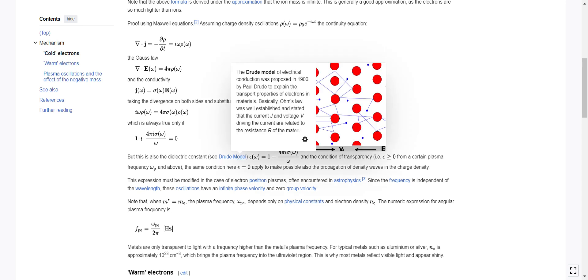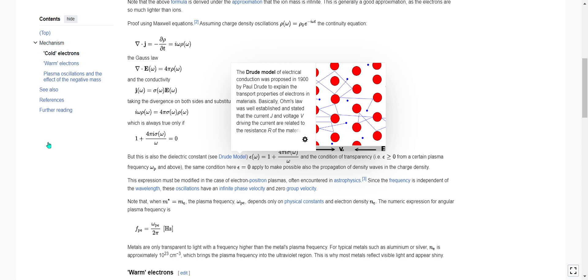But this is also the dielectric constant. See Drude model. I'm not familiar with that. The Drude model of electrical conduction was proposed in 1900 by Paul Drude to explain the transport properties of electrons in materials. Basically, Ohm's law was well established and stated that the current j and the voltage v driving the current are related to the resistance of the material.